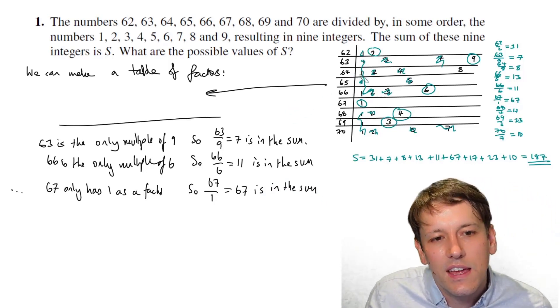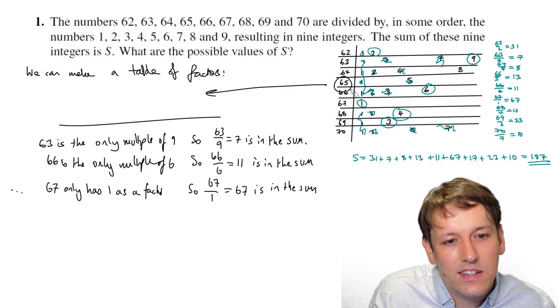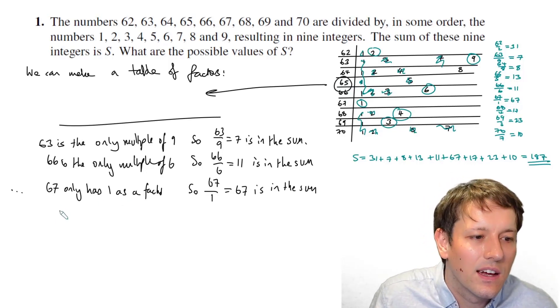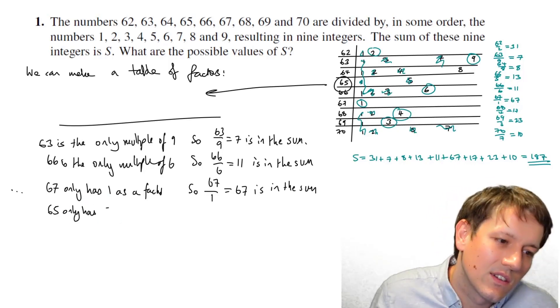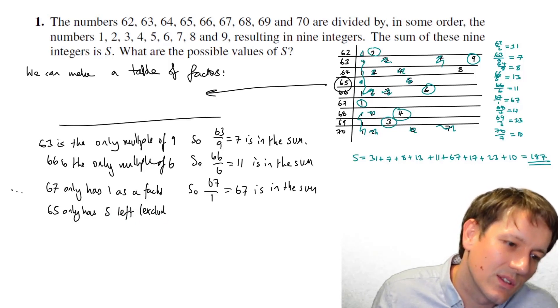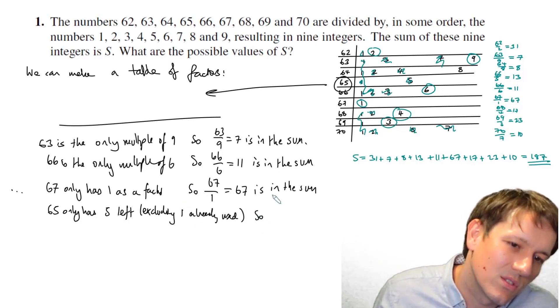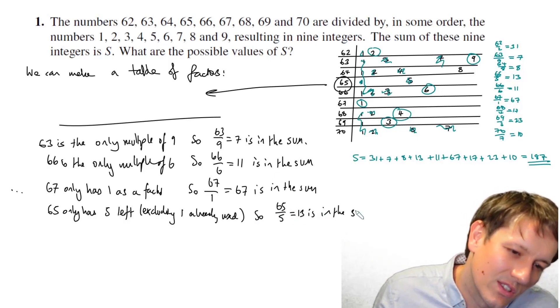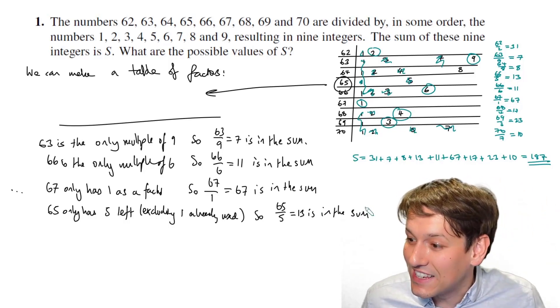I think I noticed next that 67 only has one as a factor. So 67 over one is equal to 67 is in the sum. Now, the bit that's a bit harder then to explain is perhaps, okay, why then? So when I, on the next, if I next go to 65 and say, you know, 65 only has five left, you might say excluding one already used. And I think that's pretty clear, so 65 over five equals 13 is in the sum. Now, there's not just one perfect way of writing this down. And there were different orders we could go through all of these things, right?